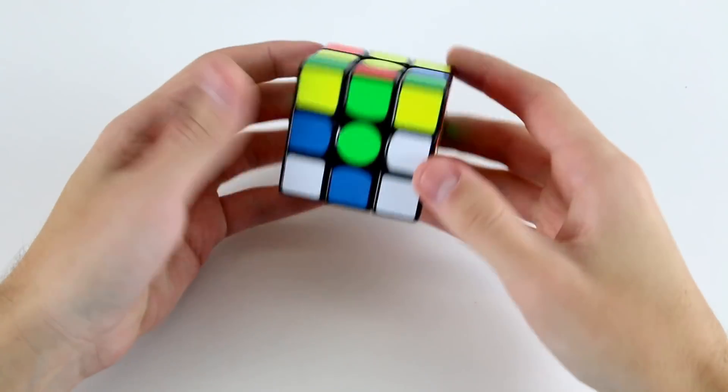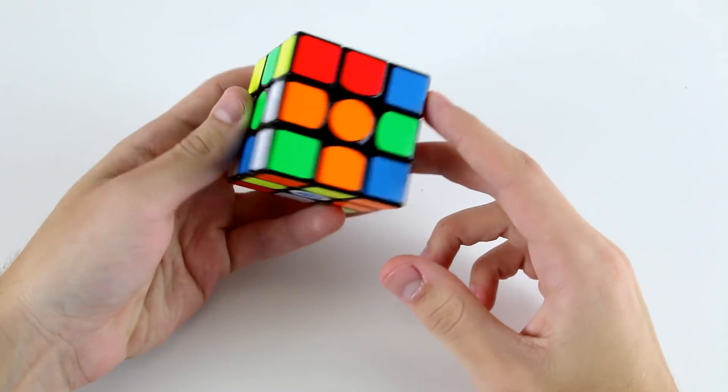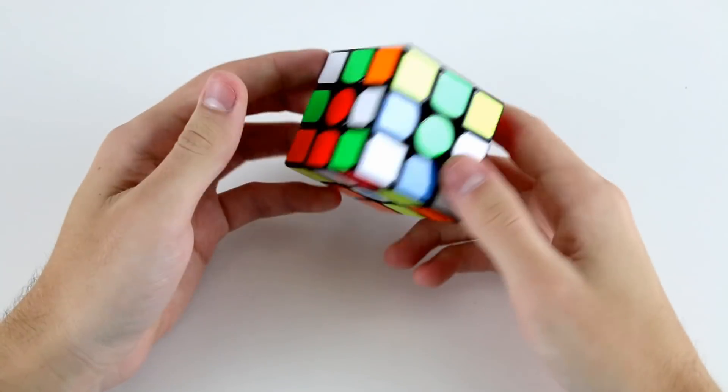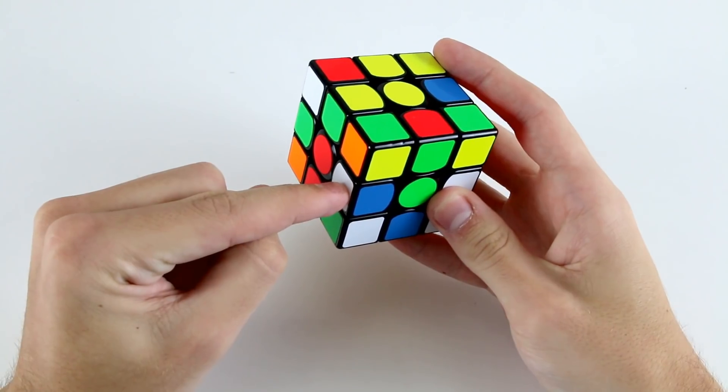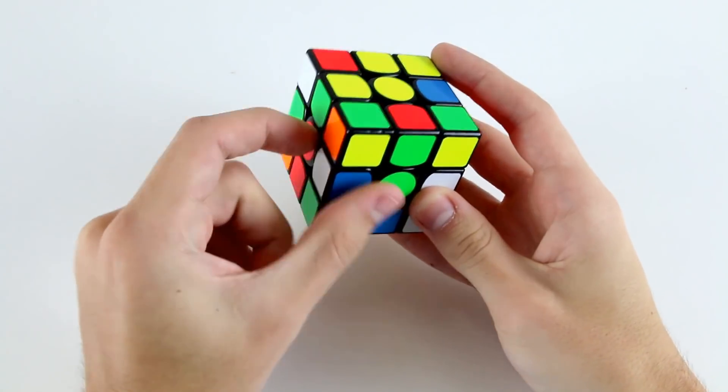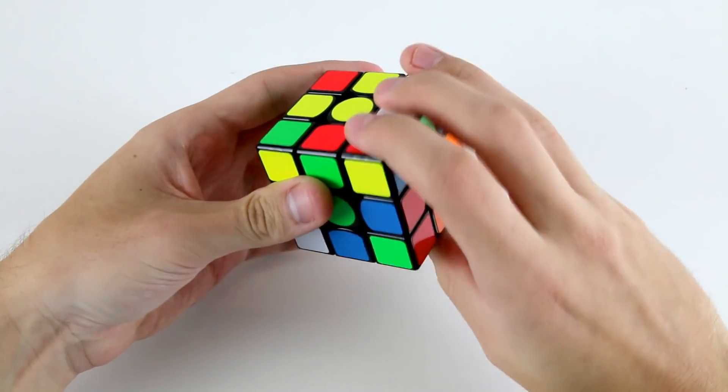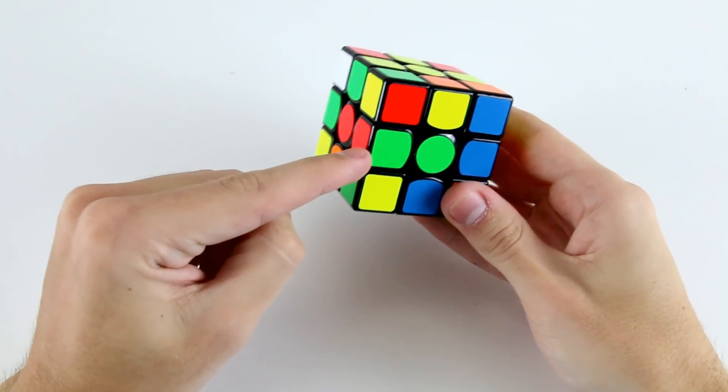I notice that if I do something like r' dr2 from this position, that will insert this edge and this edge, and then if I do a df', I'm going to insert this edge piece and this edge piece. This edge piece will be solved into this position. Let's do that, r' dr2 df'. Then I've got this edge piece solved.